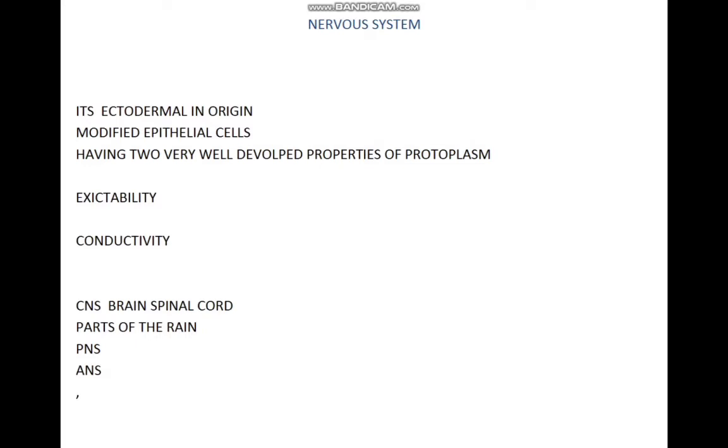The central nervous system is composed of the brain and the spinal cord. In the peripheral nervous system we have 31 pairs of spinal nerves and 12 pairs of cranial nerves. The autonomic nervous system has two divisions: the sympathetic and the parasympathetic division.